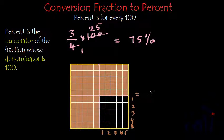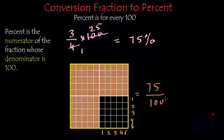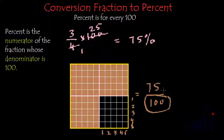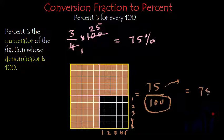So number of small parts colored in brown will be 75 and in fraction it can be written as 75 by 100. The portion colored in brown can be written as 75 by 100. And what is percent? Percent is the numerator of the fraction whose denominator is 100. So here we have denominator as 100. So we will just talk about the numerator and it will be called as 75 percent. So this was conversion of fractions into percent.